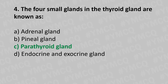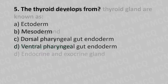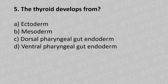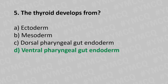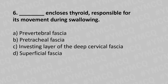Question number five. The thyroid gland is derived from: option A - ectoderm, option B - mesoderm, option C - dorsal pharyngeal gut endoderm, option D - ventral pharyngeal gut endoderm. The answer is option D - ventral pharyngeal gut endoderm.